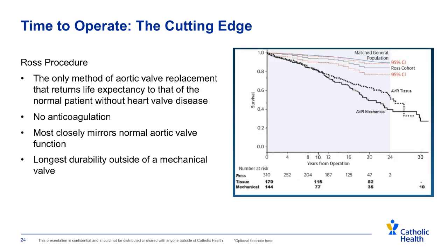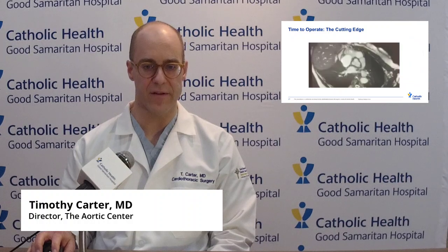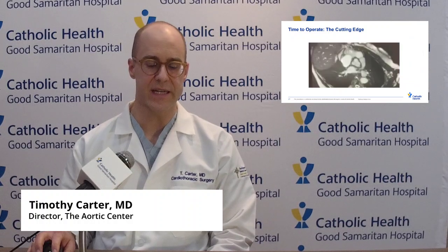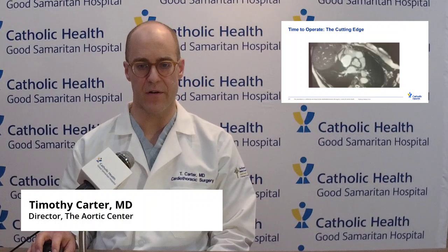Looking at these patients, you can see in the graph on the right that their survival and functional status most closely mirrors the normal healthy population. This picture shows the pulmonary valve having been moved into the aortic position, and it is almost indistinguishable from the native aortic valve from birth.